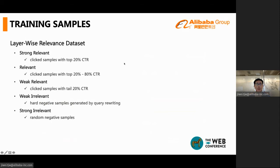Therefore, we take the clicked samples with the top 20% CTR as the strong relevant sample, and the tail 20% CTR as the weak relevant samples. The left are treated as ordinary relevant samples. Here, the CTR is calibrated to remove the influence of position bias. The position bias is estimated from a random online experiment, and it's visualized here.